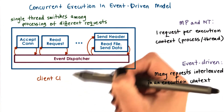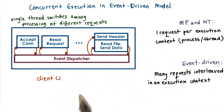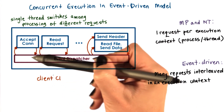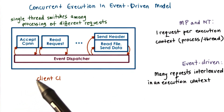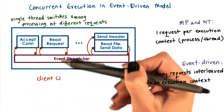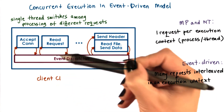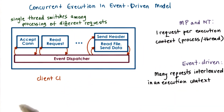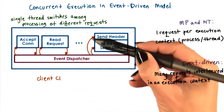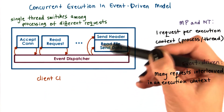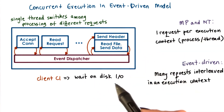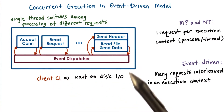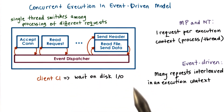Let's say we have a client request coming into the system — a request for client C1. We receive a request for a connection, that gets dispatched, and the accept operation gets processed. Then we receive the actual HTTP message, that gets processed, the message gets parsed, we extract the files, and now we actually need to read the file. We initiate I/O from the reading file handler. At that point, the request for client C1 has been processed through several of these steps, and it's waiting on the disk I/O to complete.